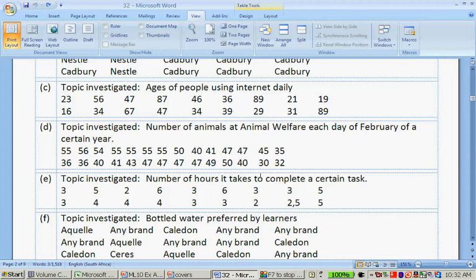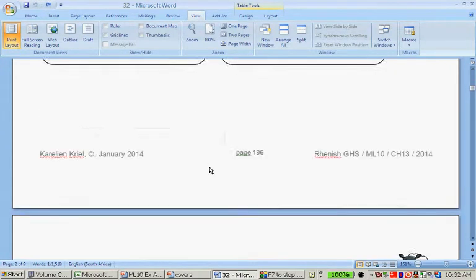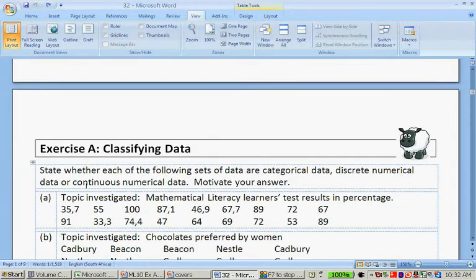Then, numbers of hours it takes to complete a certain task: 3, 5, 2. This is definitely numerical because it's numbers. But here we have two and a half, so it will be continuous numerical data.